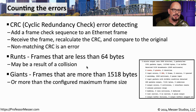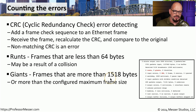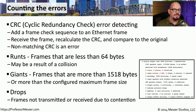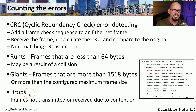The default maximum frame size on Ethernet is 1518 bytes. If you have a frame come across the network that is larger than that value, we describe that as a giant. You can also have jumbo frames that are much larger than 1518 bytes, but those jumbo frames are defined within the switches and devices you're using, so they also have a maximum size. If those frames are larger than the maximum configured size, those are also defined as a giant. And if there's some type of contention or buffering problem, these frames may be lost because there's no room to hold them in any buffer — in that case, you may see the drop counter incremented on your system.